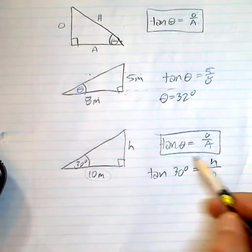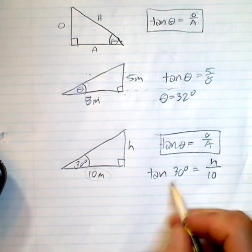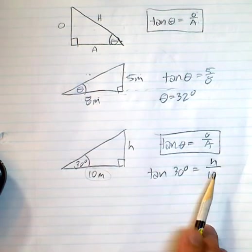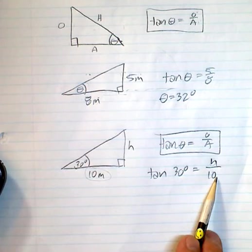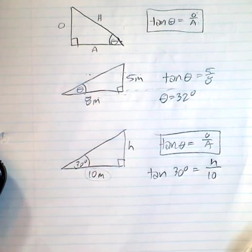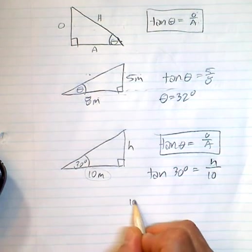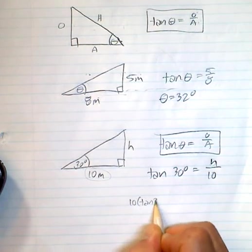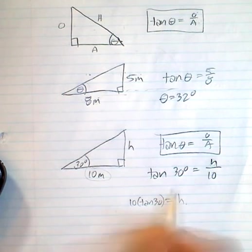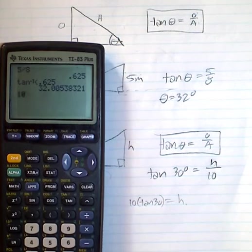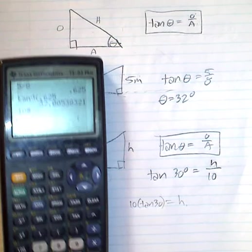Now what you've got is a situation where you have an unknown on the top. If you understand your algebra, what you're going to be doing to get rid of the 10 is multiplying by 10. So you have 10 times tan 30 equals h. And what we do in our calculator is 10 times tan 30.